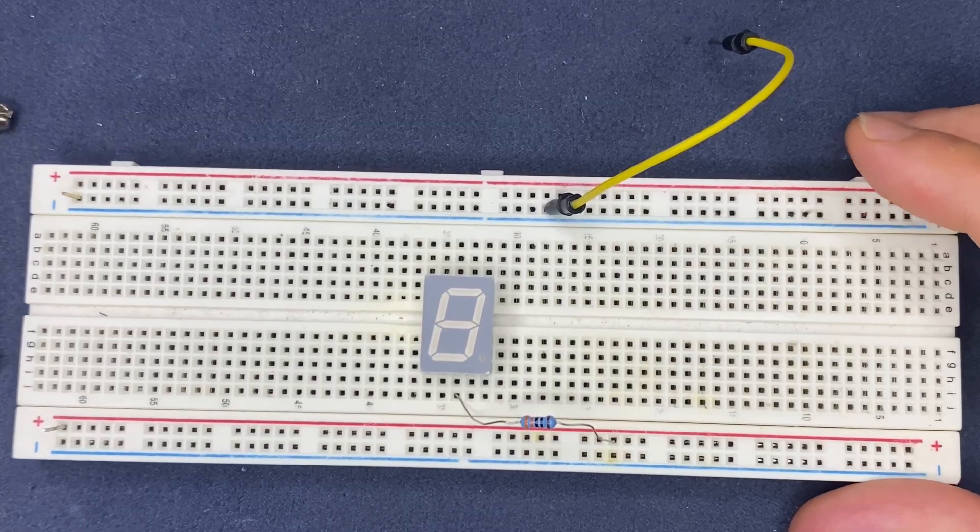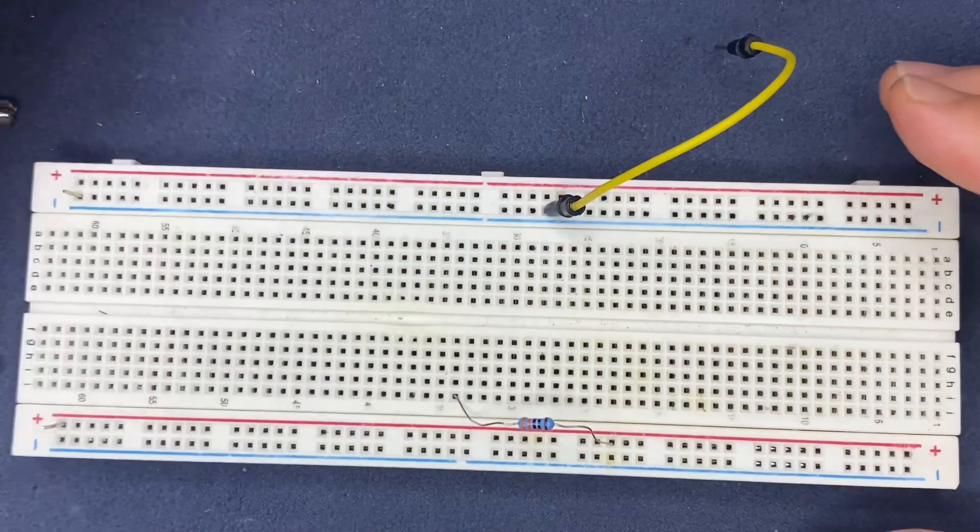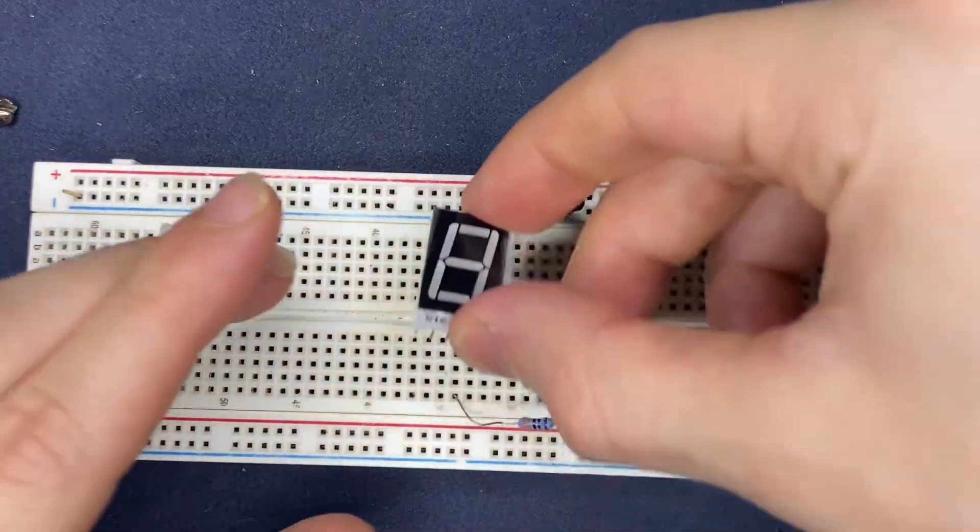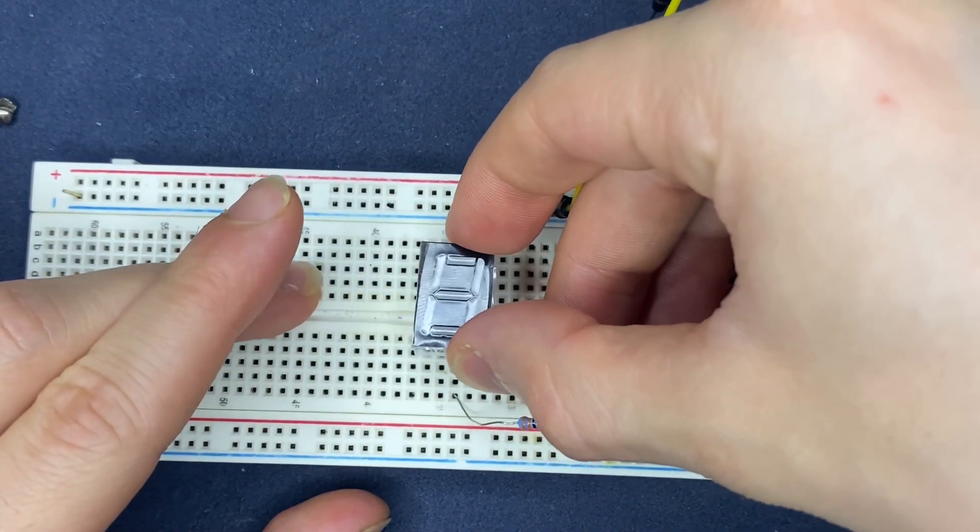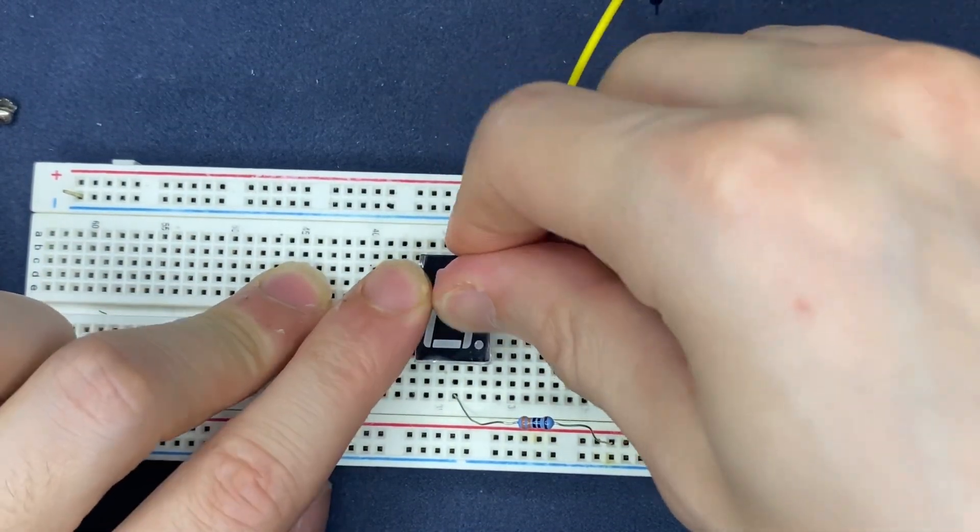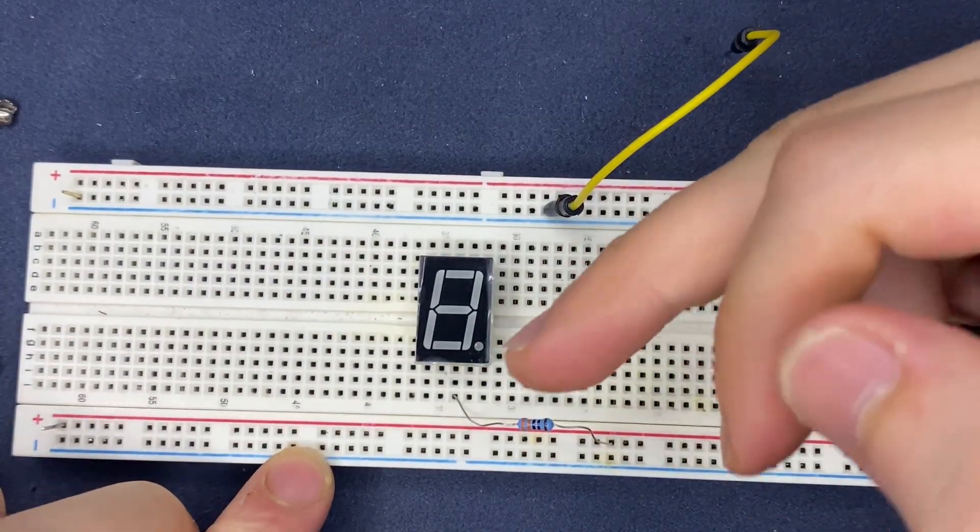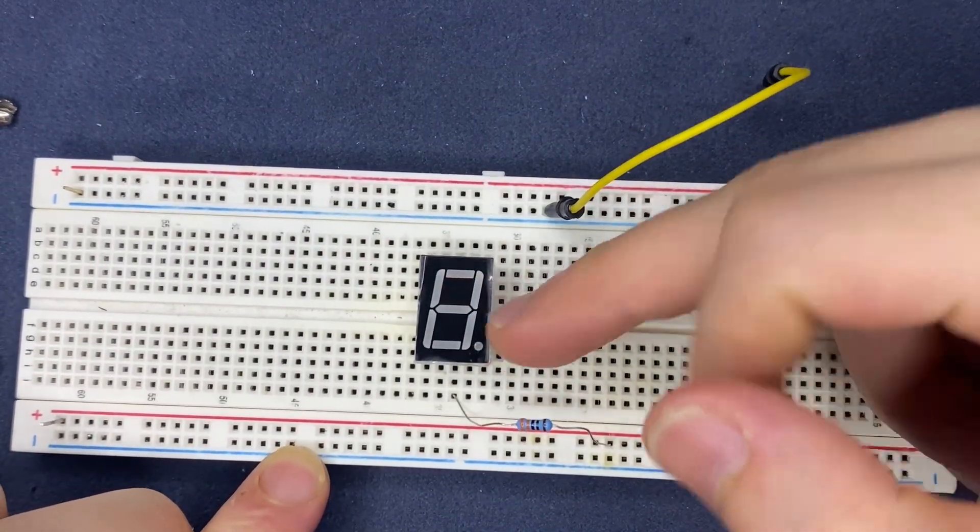That was it with the common anode, let's check common cathode. I'm using another 7-segment display. This time, I'm going to connect the common pin of the display to ground.